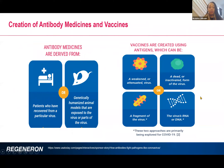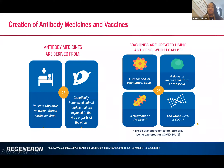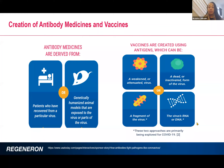Antibody medicines are derived from patients who have recovered or from animal models exposed to the virus that have generated an immune response allowing the antibodies to be created. Vaccines take a slightly different path — using weakened or attenuated virus, fragments of a virus, a deactivated virus, or the RNA or DNA of the virus, as with the two current EUA-approved vaccines, to generate a vaccine response.